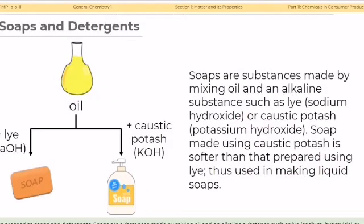Now let us proceed to soaps and detergents. Soaps are substances made by mixing oil and an alkaline substance such as lye, sodium hydroxide, or caustic potash, potassium hydroxide. Solid soap is produced when lye is used, while liquid soap can be made using potash.